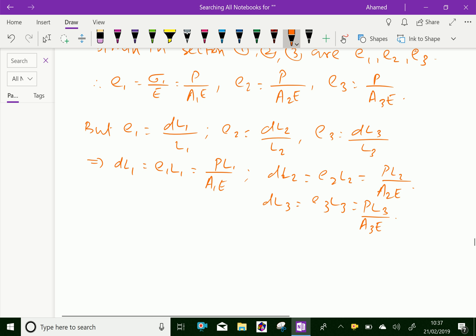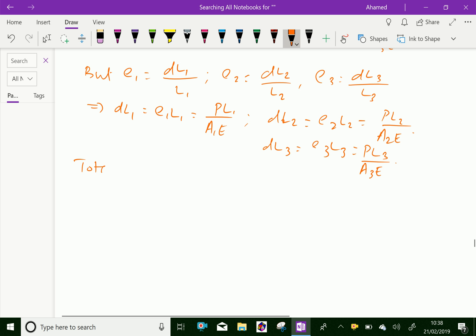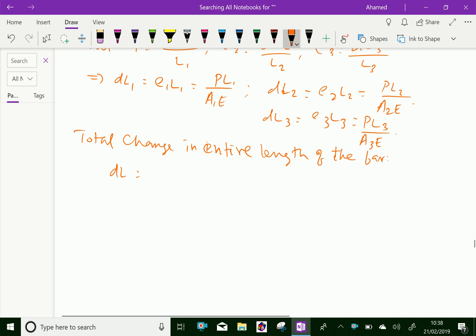Now, therefore, total change in the entire length of the bar, that is delta L, equals delta L1 plus delta L2 plus delta L3.